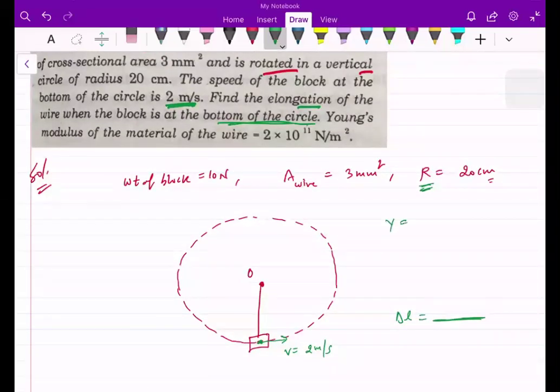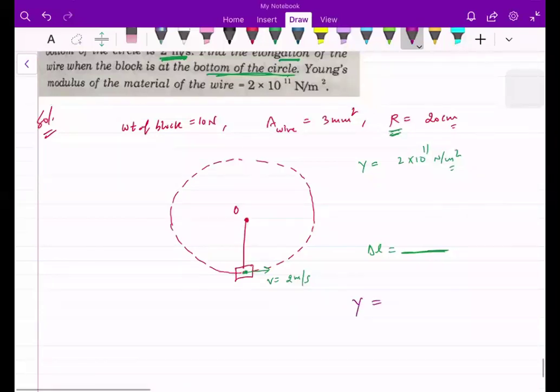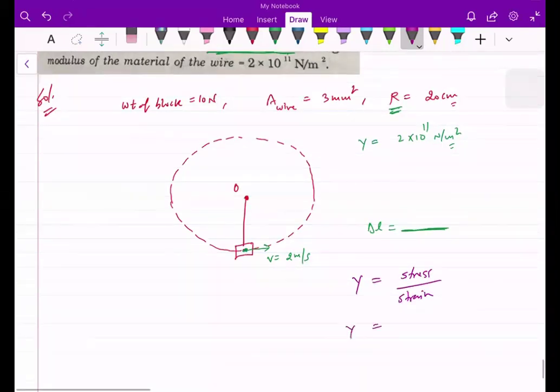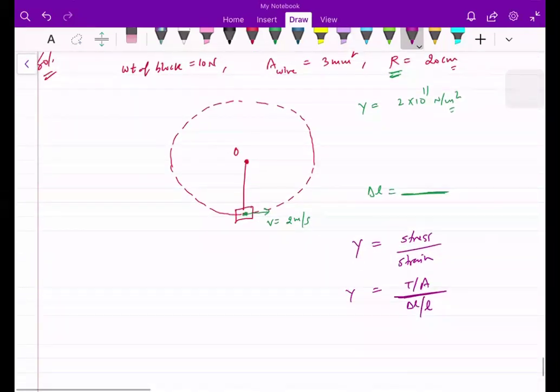We have given Young's modulus value. The question is clear. Young's modulus, we have stress over strain. Stress is tension over the area, strain is delta L over L.